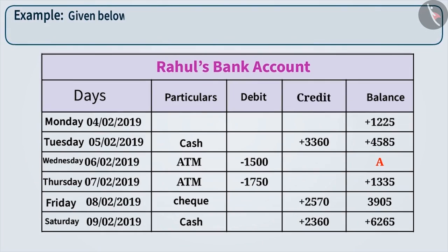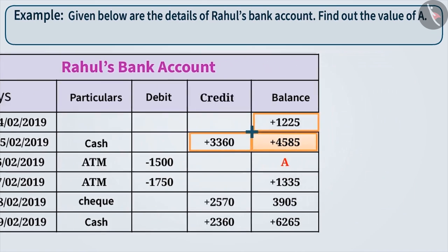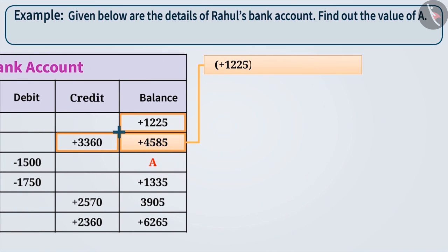Example 1. Given below are the details of Rahul's bank account. Find out the value of A. By adding the money credited or debited to the balance, we get a new balance. Here, plus 1225 plus 3360 is equal to plus 4585.